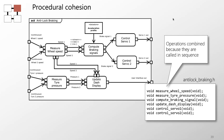Related is procedural cohesion. In an anti-lock braking system we have measuring wheel speed, measuring tyre pressure, and so on. It is compelling to put those together because they happen to be used in sequence — there is sequential coupling between them. However, each piece of functionality may represent different parts of the system, so state information is still distributed. If you want to reuse the dashboard display in another system, you'd have to unpick its functionality from multiple different modules.